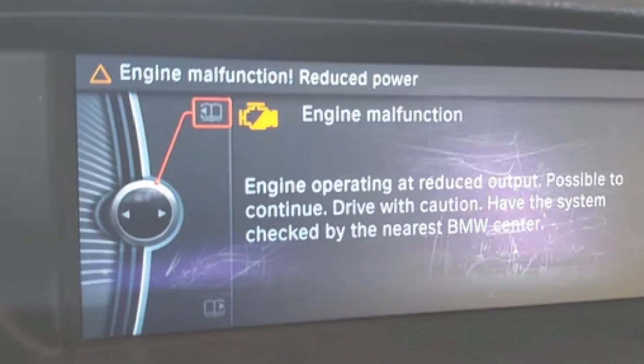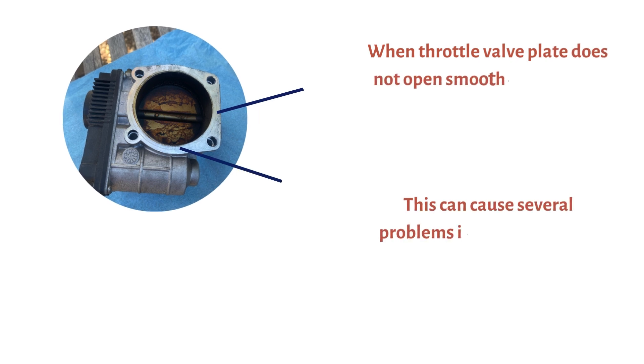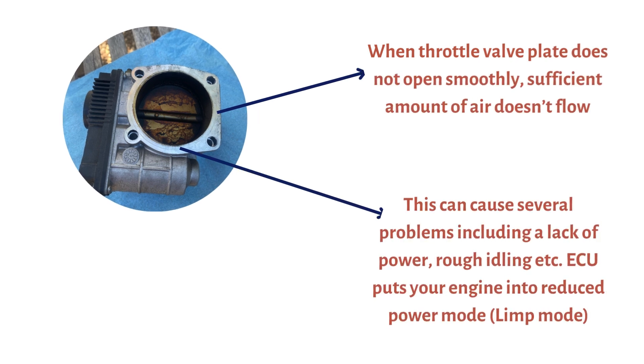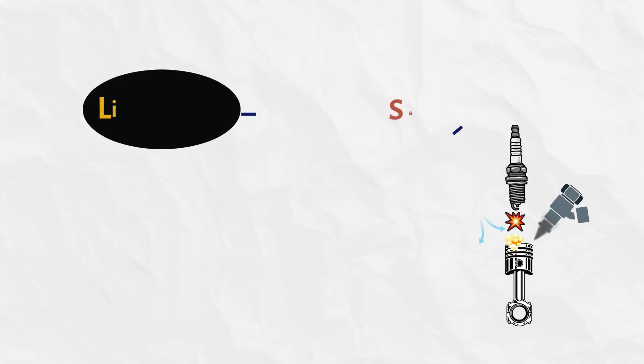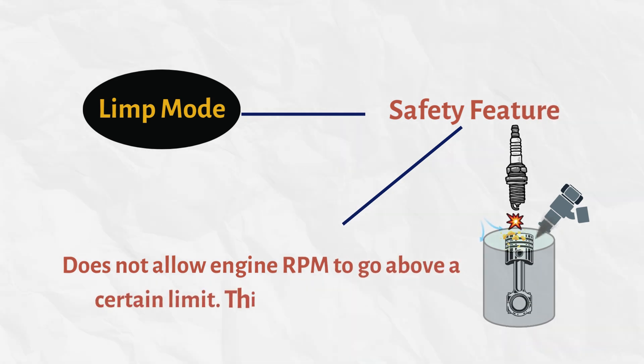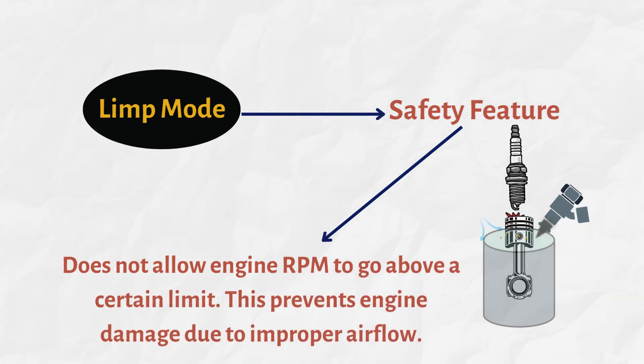Symptom 4: Limp Mode. When severe throttle body problems develop, you may notice the car goes into a protective limp mode. This safety feature limits engine RPMs and power output to avoid potential engine damage from uncontrolled airflow.